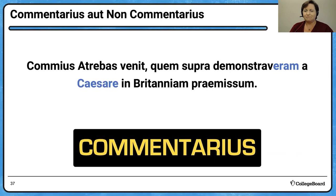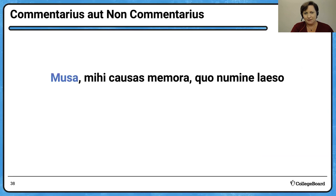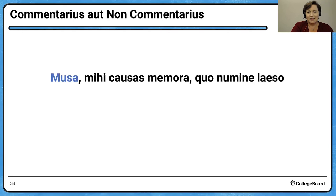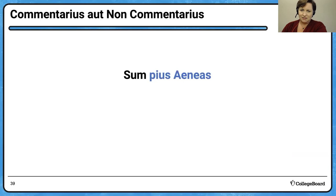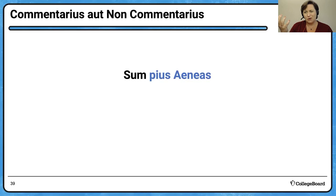Next example: it starts 'Musa, mihi causas memora' — 'Muse, remember the reasons for me.' This is the invocation of the Muse from the beginning of the Aeneid — so this is non-commentarius. Caesar does not invoke the Muse. Next: 'Sum pius Aeneas' — this is definitely in the Aeneid. One reason you know it is the standard epithets characters have in epic poetry — 'pius' is always Aeneas's epithet, he's loyal. This is an epic, non-commentarius.